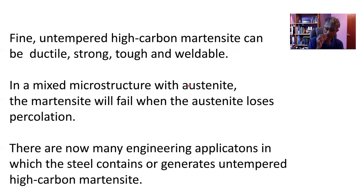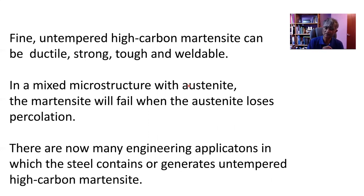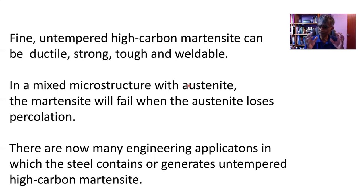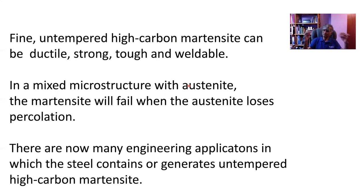To summarize: we have fine, untempered, high carbon martensite which can be ductile, strong, remarkably tough, and weldable. This makes a steel which is really very valuable. In a mixed microstructure with austenite and martensite, failure will occur when the austenite loses percolation. There are now many engineering applications in which the steel contains or generates untempered high carbon martensite. We need to change our teaching of martensite — although conventionally when you quench steel to obtain untempered martensite it tends to be brittle, we can engineer the structure so that it is no longer brittle.